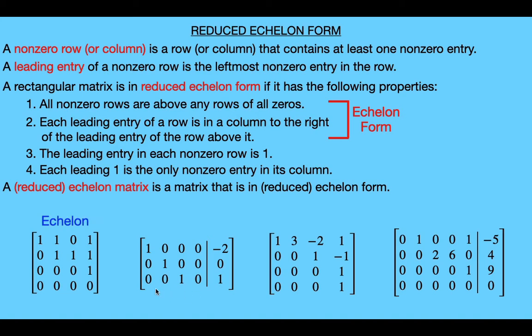For our next matrix, there are no rows of all zeros, so trivially the first property is satisfied. The leading entries again form a staircase-like pattern so property two is satisfied. Property three is satisfied since each leading entry is one. And since each of these three leading ones are the only non-zero entries in their respective columns, property four is satisfied as well. So this matrix is in reduced echelon form.